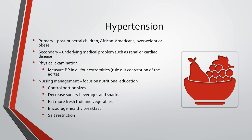Hypertension is an acquired cardiovascular disorder with a rise among children and adolescents. Primary hypertension is seen in post-pubertal children, African Americans, and those who are overweight or obese. Secondary hypertension involves underlying medical problems such as renal or cardiac disease. On physical examination, measure blood pressure on all four extremities to rule out coarctation of the aorta. Nursing management focuses on nutritional education: controlling portion sizes, decreasing sugary beverages and snacks, eating more fresh fruits and vegetables, encouraging healthy breakfast, and restricting salt intake.